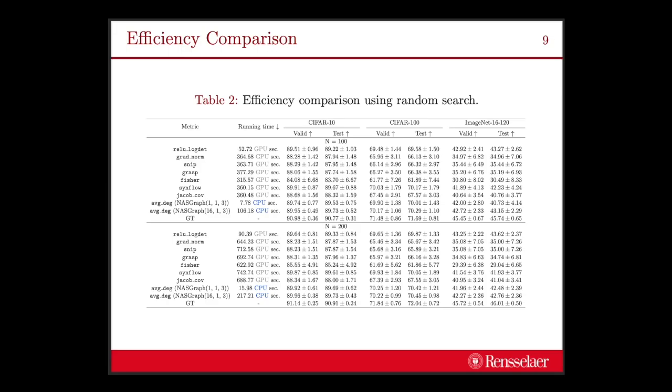In addition to the ranking correlation, we also compare the efficiency with other training-free NAS methods. As the result indicated here, our method has a very short running time. More importantly, our method only relies on the CPU, as our method computes the score for each neural architecture by computing the graph layers. The computation of the graph layers is pretty lightweight, so the entire computation process is pretty efficient.